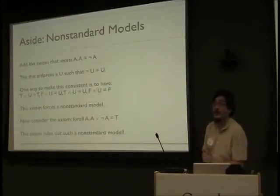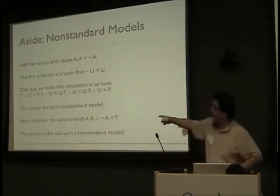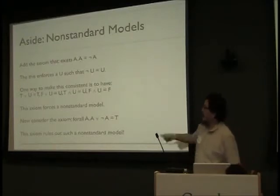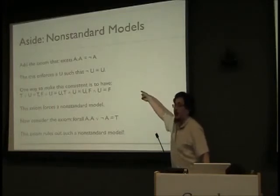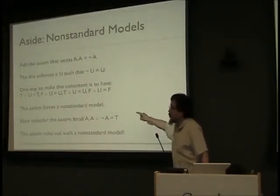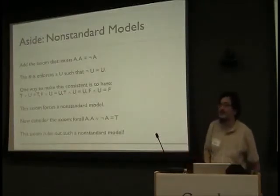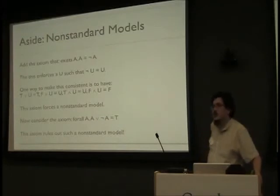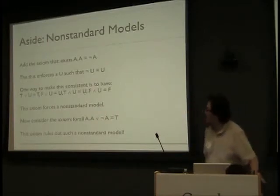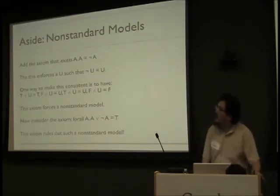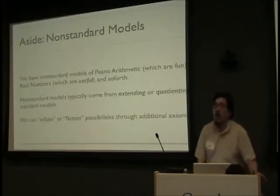Now consider another axiom: for all A, A-or-not-A equals true. Well, now that other axiom can't hold. So one axiom forces a U; the other rules out at least a U such as the one we've introduced — it rules out non-trivial ones, because it's an equational theory, so the one-element algebra always satisfies. This phenomenon occurs all over the place — it occurs in Peano arithmetic. The non-standard models I know of are giant; you can't even touch them computationally. Real numbers, on the other hand, give you non-standard analysis, which is actually very useful for formalizing things.